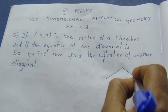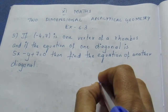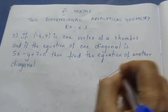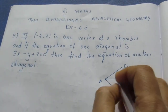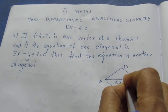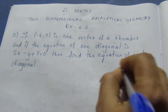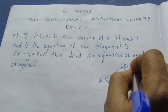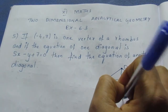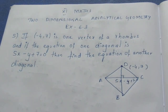So there is a rhombus. This is one diagonal of the rhombus, given by 5x minus y plus 7 equals 0. The vertex (-4, 7) lies on the rhombus. The diagonals of a rhombus intersect at 90 degrees.